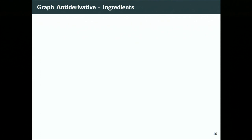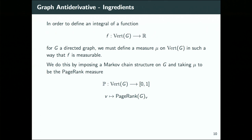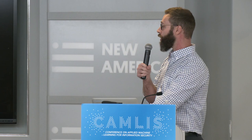We want to find a graph antiderivative of these functions. To define an integral of a function on the vertex set of directed graph G, we must define a measure μ on the vertex set — some way of assigning weight to each vertex. This is trivial since the vertex set is finite. We impose a Markov chain structure on G and take μ to be the PageRank measure. The PageRank vector is the steady-state probability distribution over nodes resulting from the long-run behavior of a random walk Markov chain.